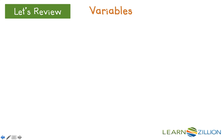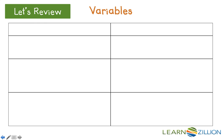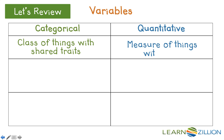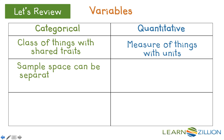You also already know that there are two types of variables. Categorical variables are the type where there are classes of things with shared traits, whereas quantitative variables are things that you measure with units. For categorical variables, the sample space can be separated into a finite number of classes.